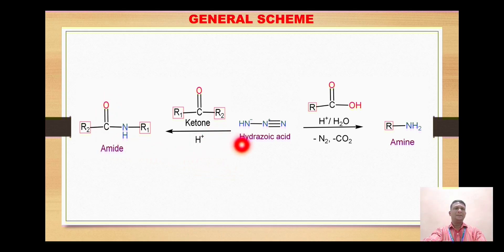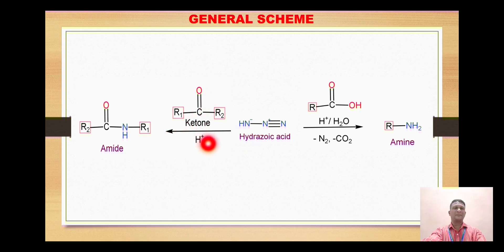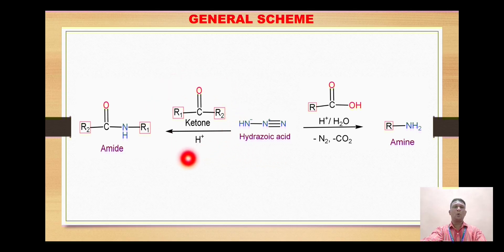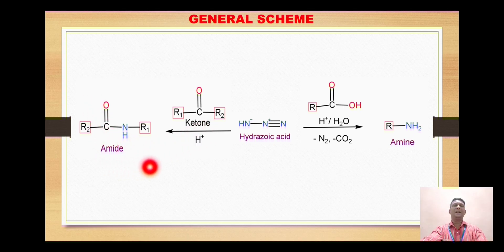In the reaction with ketone, the NH group is inserted between the carbonyl carbon and the alkyl group. For example, if this is the carbonyl carbon and this is the alkyl group, the NH group gets inserted here. So whenever hydrazoic acid is treated with a ketone, there is formation of amide by insertion of NH — the reactant and product differ by one group.